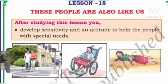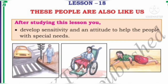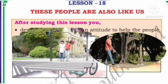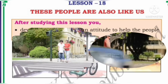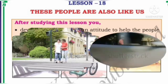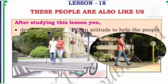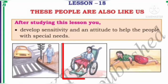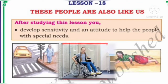In our textbook, in the first picture we can see a blind person waiting to cross the road. A person who cannot see is called a blind person. What should we do? We should help him to cross the road. In the next picture we can see a girl who cannot walk and is on a wheelchair.